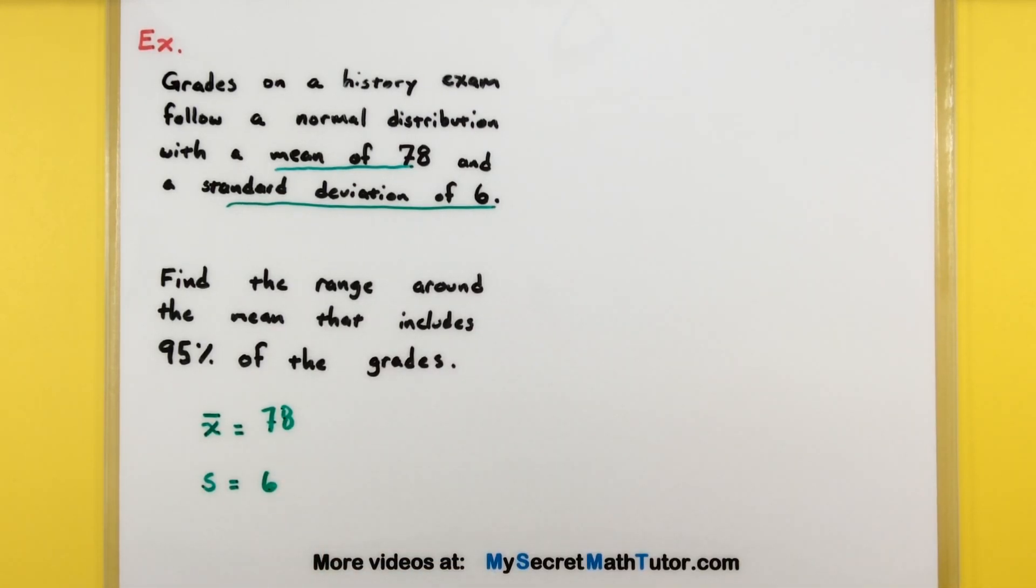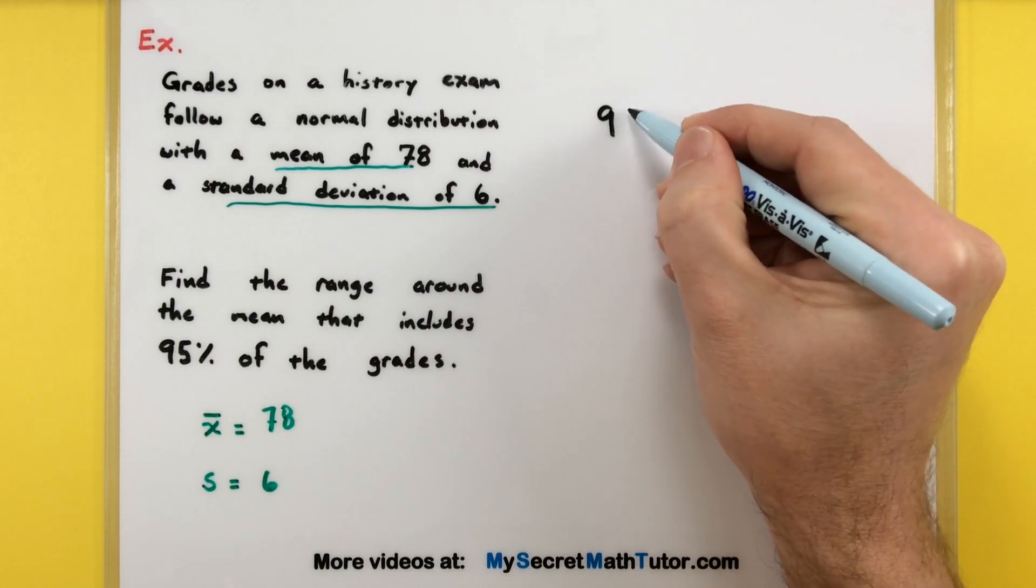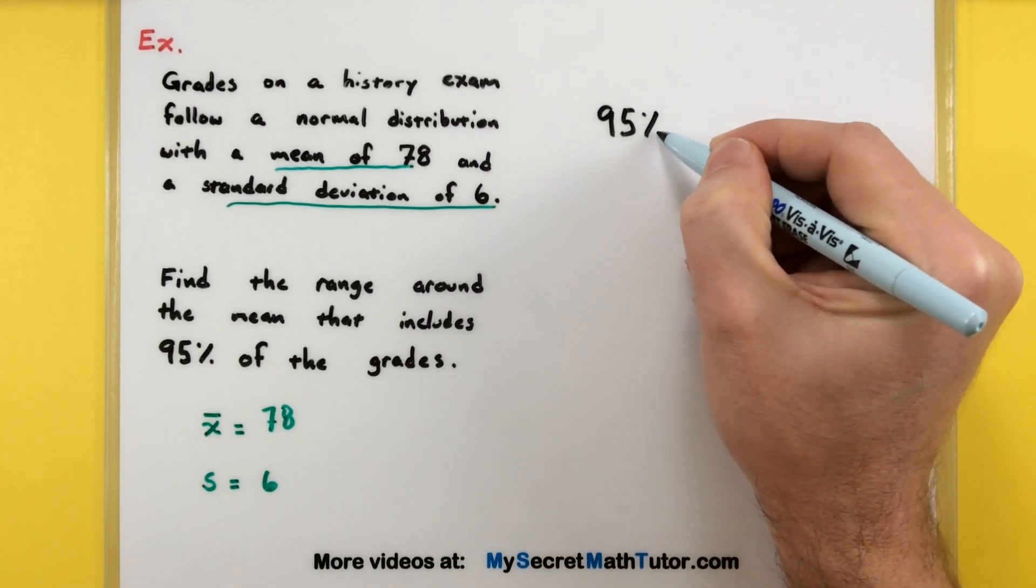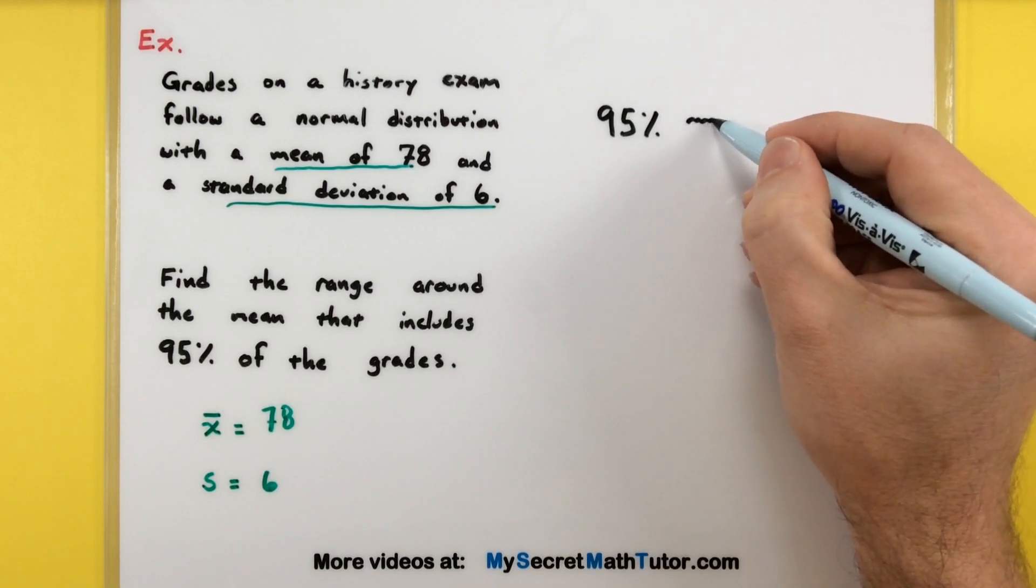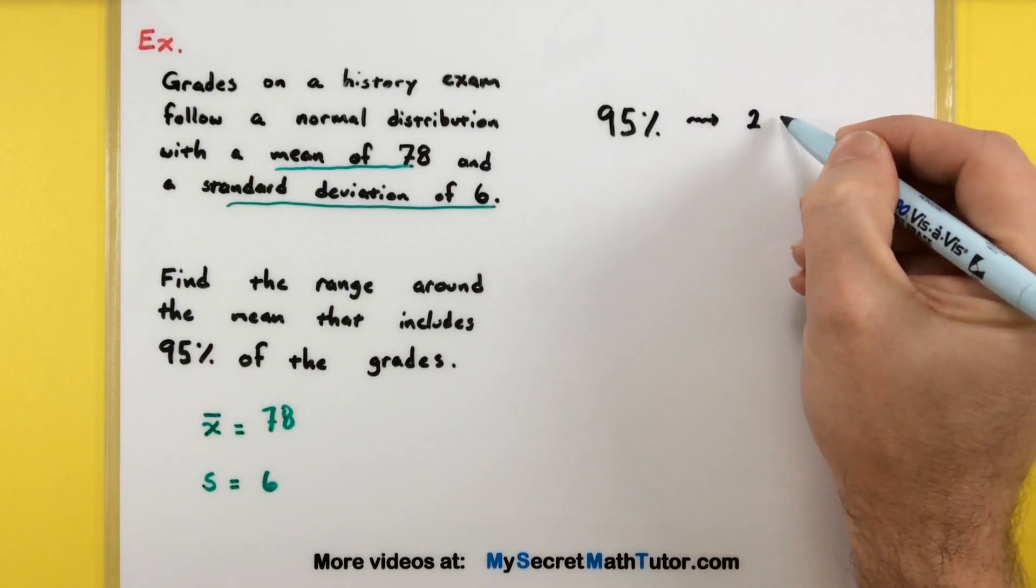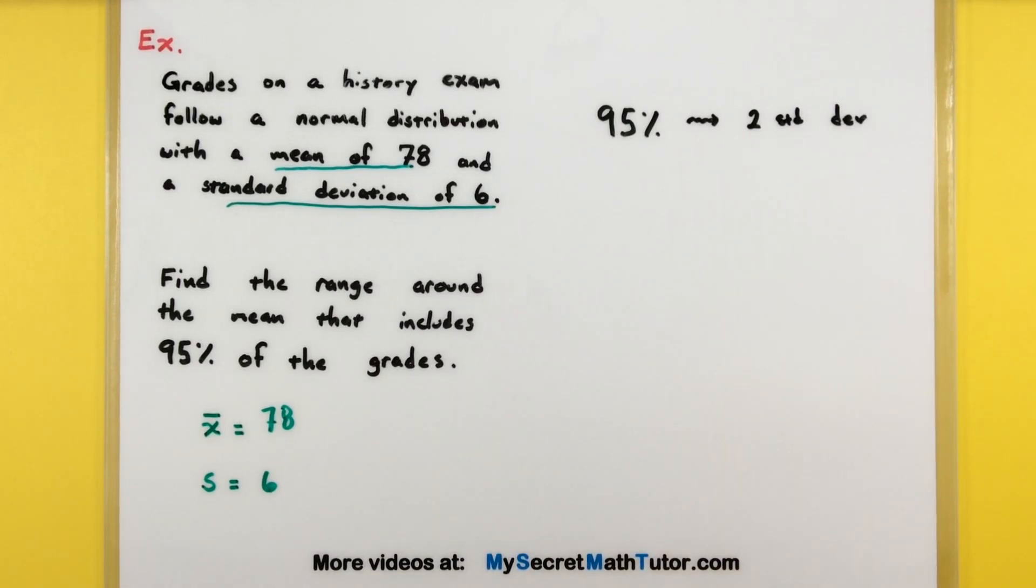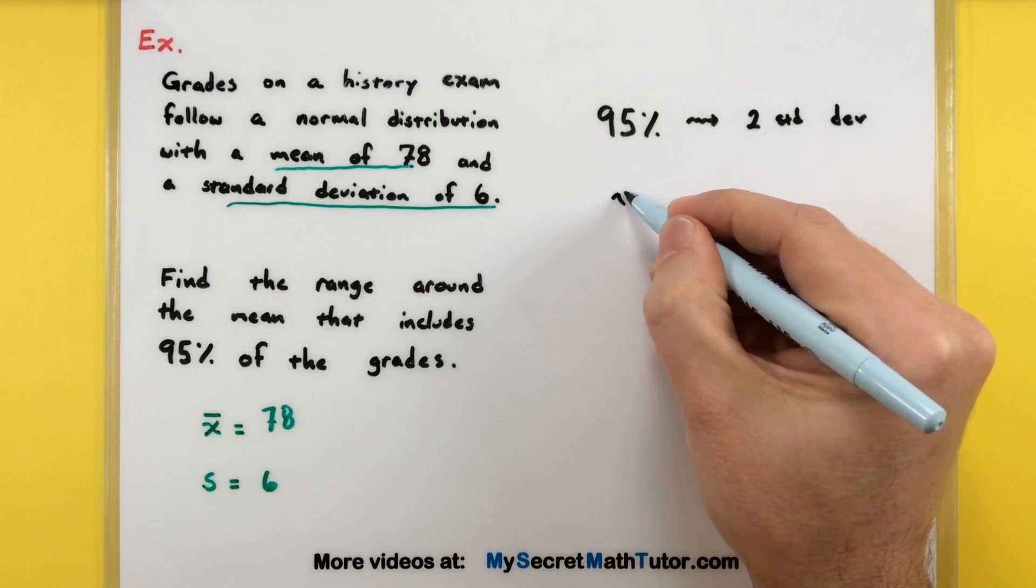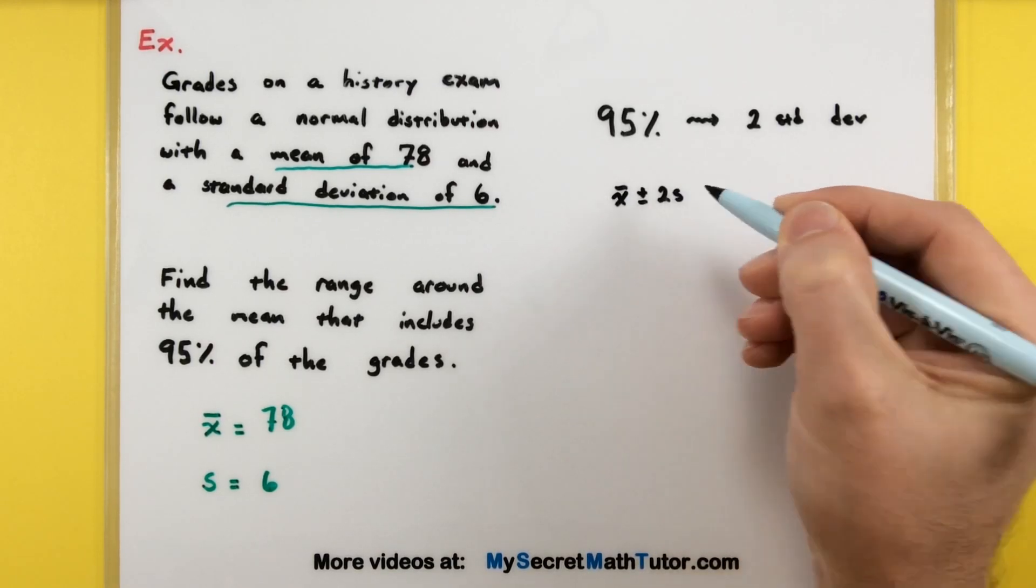We're looking for the range around the mean which includes 95% of the grades. If we recall back to the empirical rule, 95% around the mean corresponds to two standard deviations on either side of our mean. So we really need to take our mean and add or subtract two standard deviations around it.